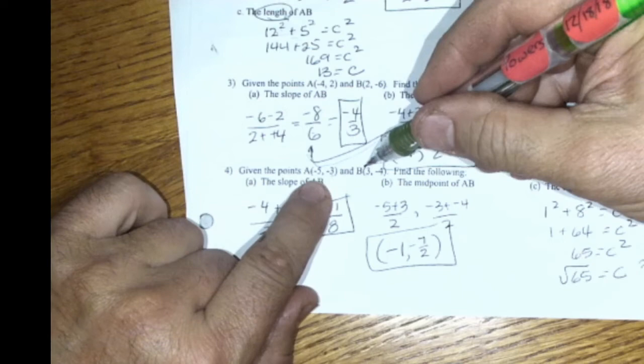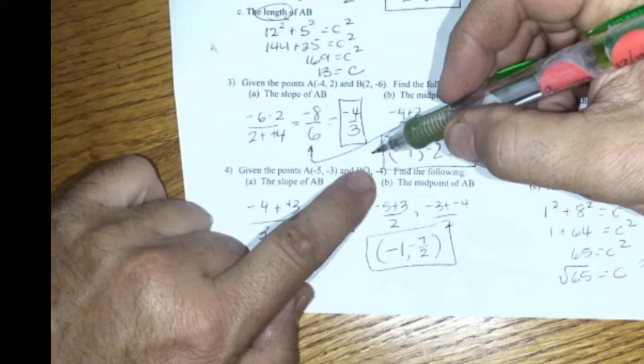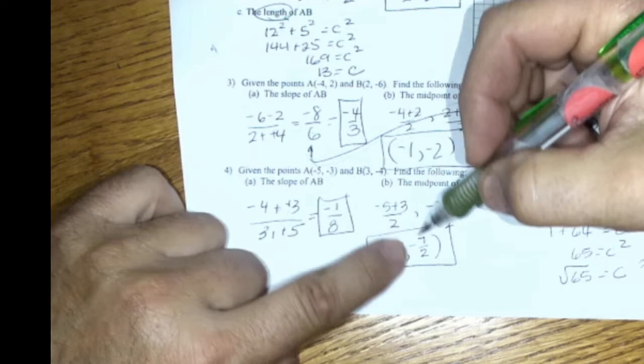Find the midpoint. So you add these two together. Divide by 2. So that's negative 2 divided by 2 is 1. And then look at the y's now. So add those together. It's negative 7 divided by 2. Perfect.